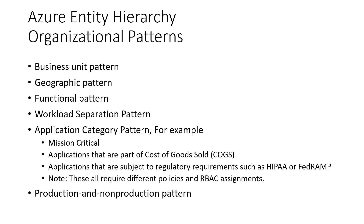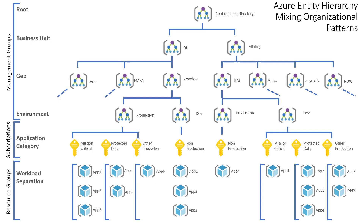As an organization grows, other application categories often emerge that form logical boundaries for subscriptions. For example, applications that are mission critical, apps that are part of costs of goods sold or COGS for a company, and apps that are subject to regulatory requirements such as HIPAA or FedRAMP. In general, these are good categories because they each require different policies and RBAC assignments. It is generally a good idea to keep your production data, apps, and other assets out of your dev/test environments — they should at least be in different subscriptions. Management group hierarchies can be up to six levels deep, not including the root, and 10,000 management groups can be supported in a single directory.